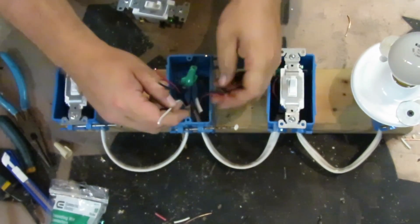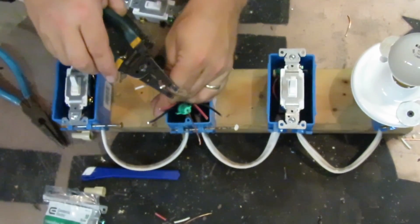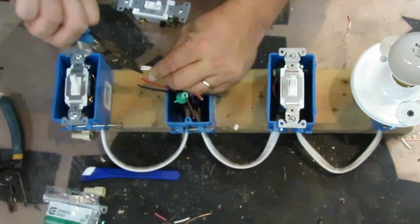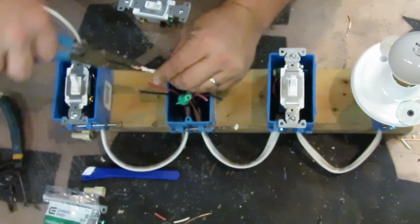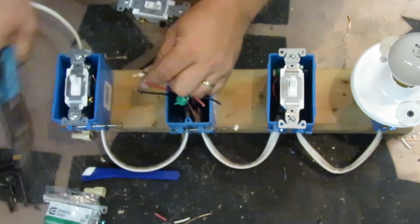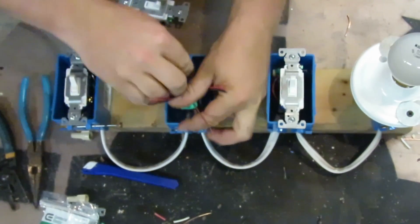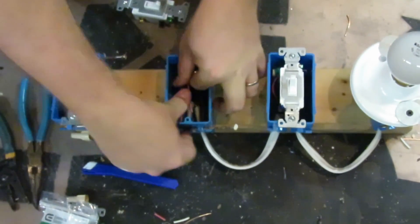Now I'm going to take the neutrals, twist them together, and you can strip off as much as you want and just trim it down to a size that works. Then put a wire nut on the end to make your connections, and that's all you have to do for cutting the box in.